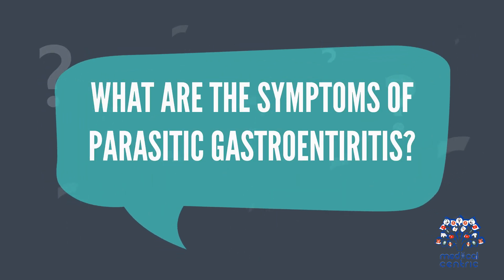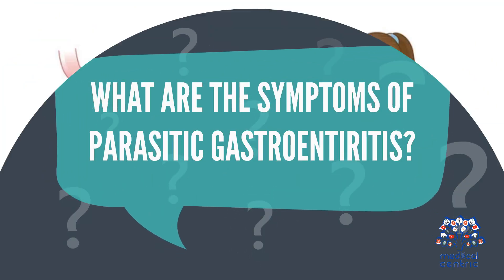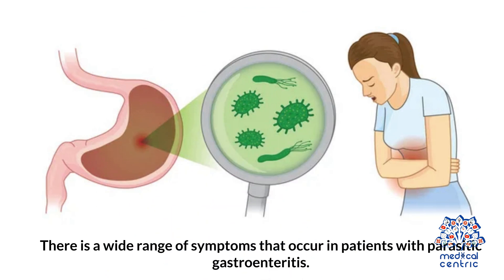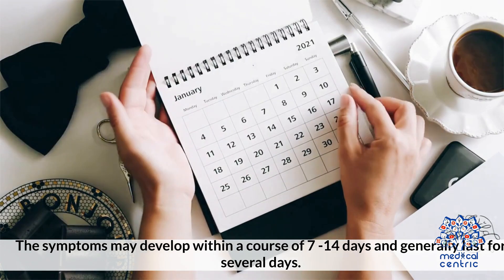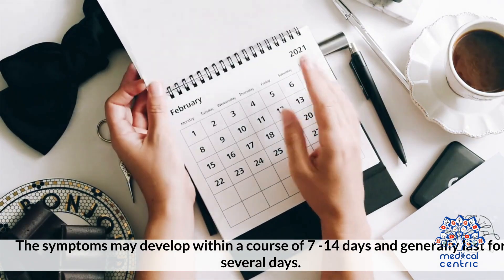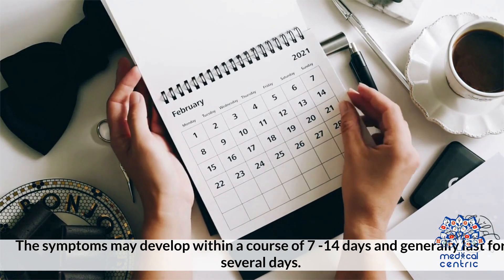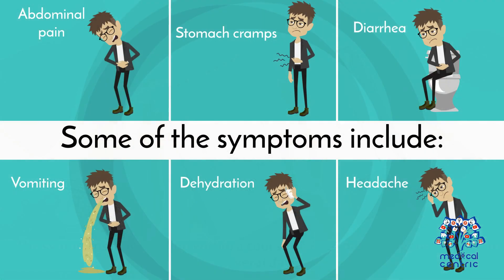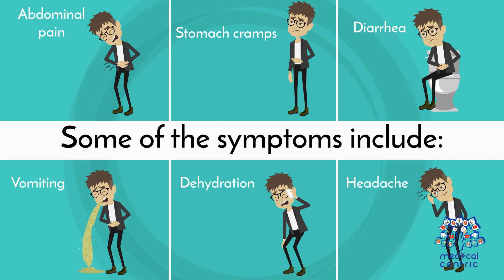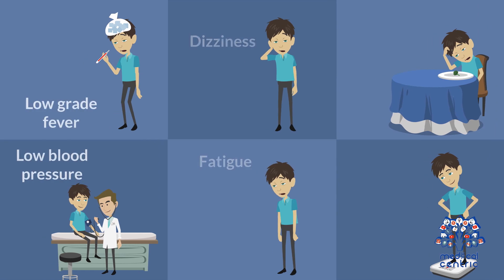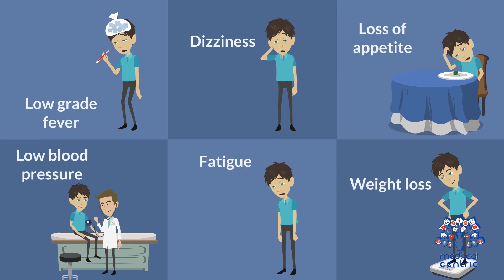What are the symptoms of parasitic gastroenteritis? There is a wide range of symptoms that occur in patients with parasitic gastroenteritis. The symptoms may develop within a course of 7 to 14 days and generally last for several days. Some of the symptoms include abdominal pain, stomach cramps, diarrhea, vomiting, dehydration, headache, low-grade fever, dizziness, loss of appetite, low blood pressure, fatigue, and weight loss.